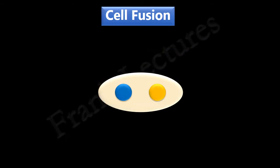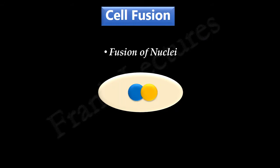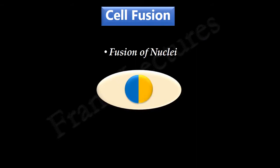In the next step, this heterokaryon undergoes cell division and the two nuclei also fuse. The resulting cell now contains a single large nucleus having two sets of chromosomes. This cell is known as a somatic cell hybrid.